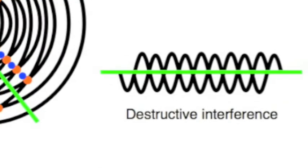And so along those green lines, you have destructive interference, where the crests and troughs cancel each other out.